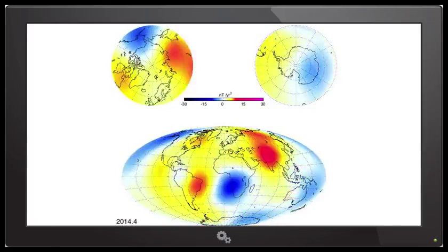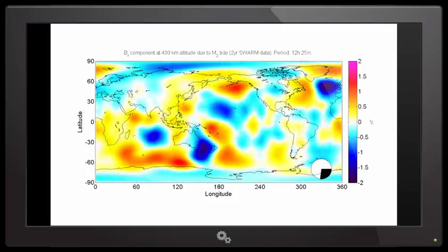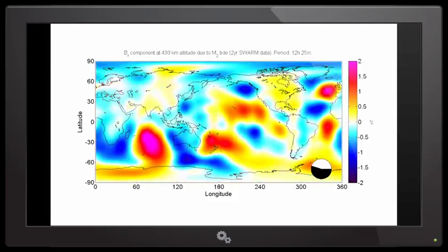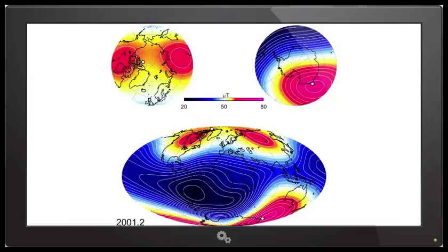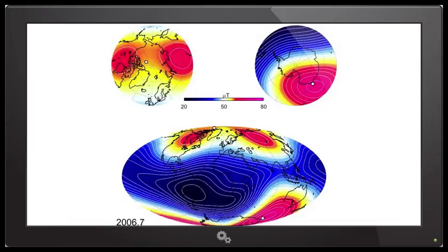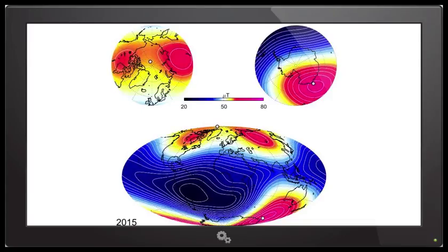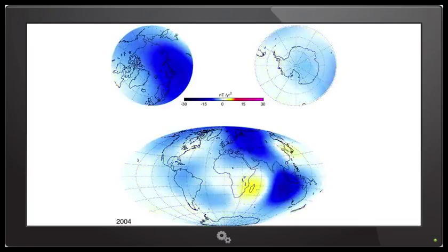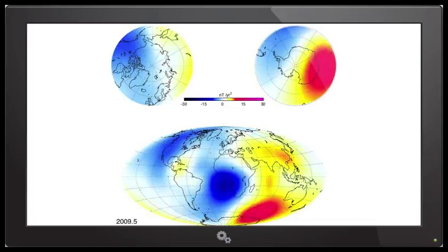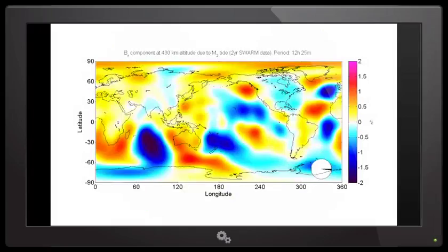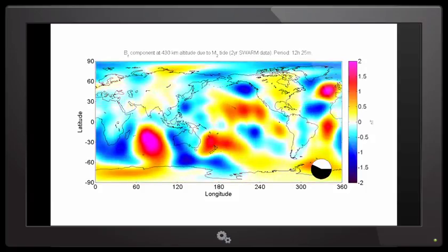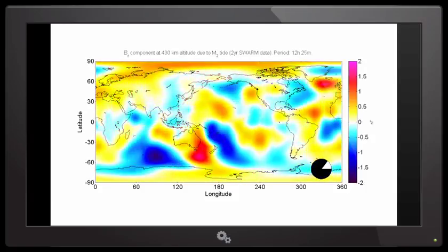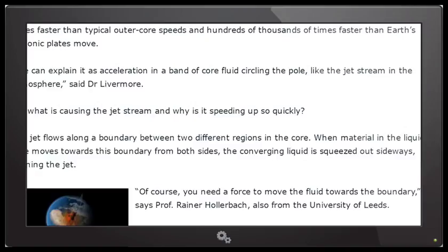Those are probably those lobe thingies I'm talking about. You know, lava lamp. I was talking about in my other videos how the North Pole has just turned into a bunch of lava blobs. These high-latitude flux patches are like bright spots in the magnetic field, and they make it easy to see the changes in the field, explained Dr. Livermore. Swarm reveals that these changes are actually a jet stream moving at more than 40 kilometers a year, three times faster than the typical outer core speeds and hundreds of thousands of times faster than Earth's tectonic plate move.